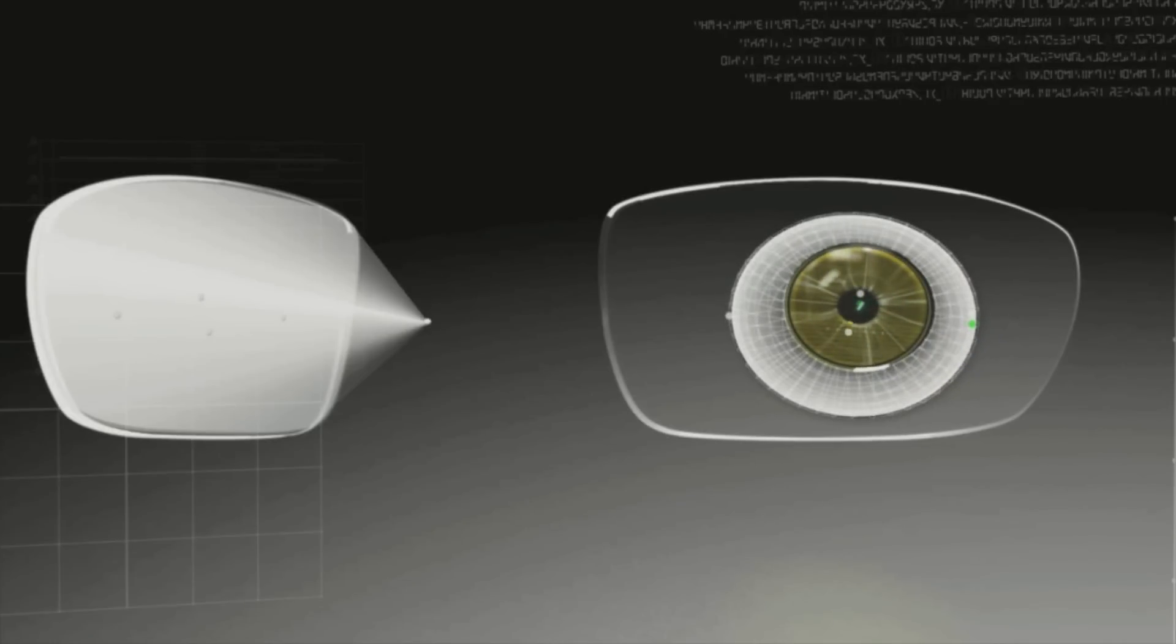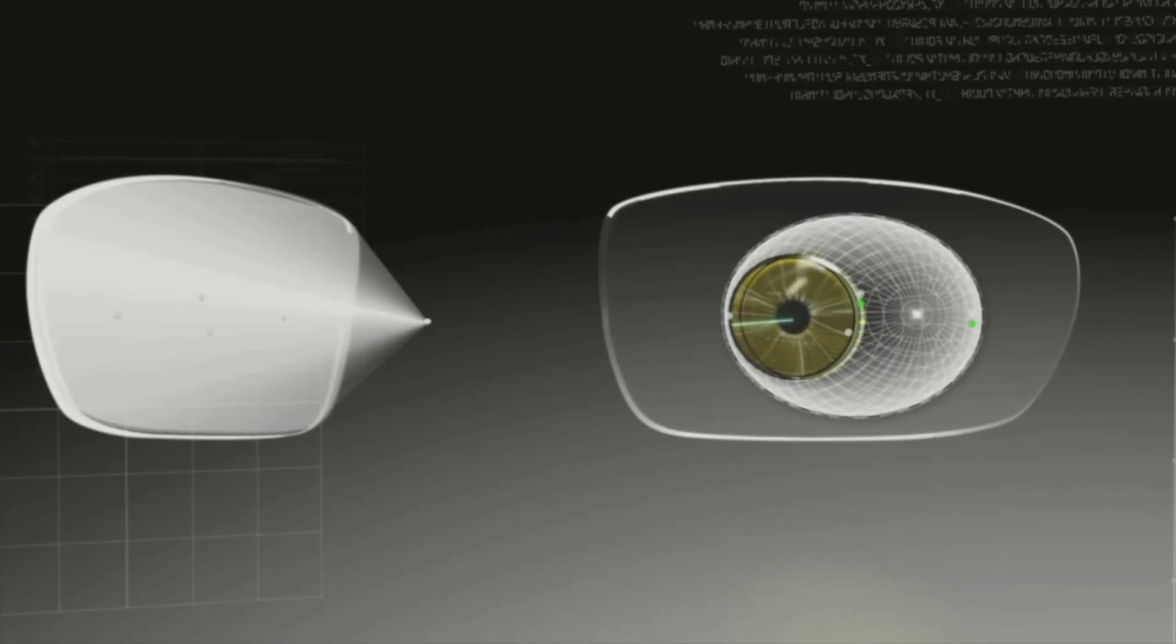Knowing the position of the eye rotation center is the only way to calculate the unique optical function for each gaze direction and achieve a perfect lens-to-eye alignment.